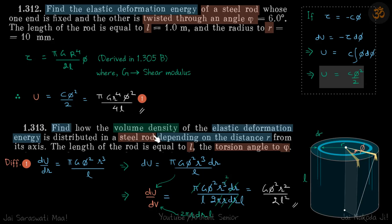In problem 1.313 we need to find how the volume density of elastic deformation energy is distributed depending on distance r, when the rod is twisted by phi. We have a solid rod twisted by angle phi, and we consider a cylindrical shell at distance r. We need to find what we can say about the energy stored per unit volume of that shell alone.